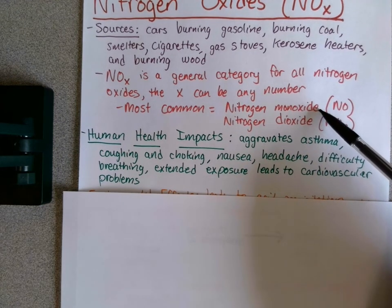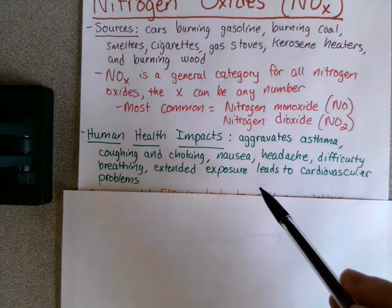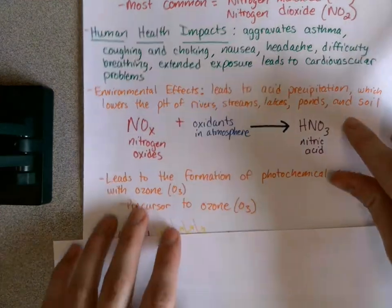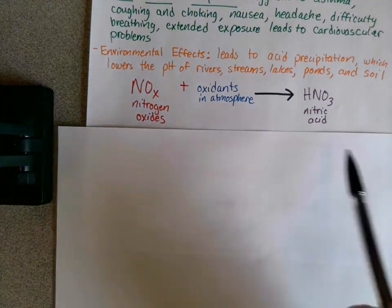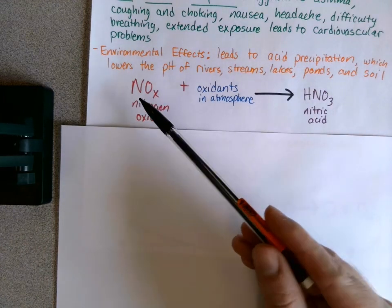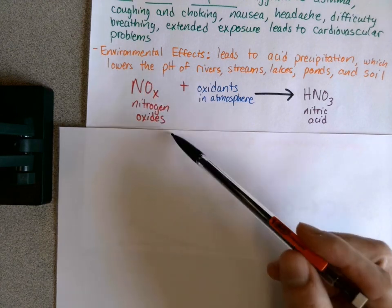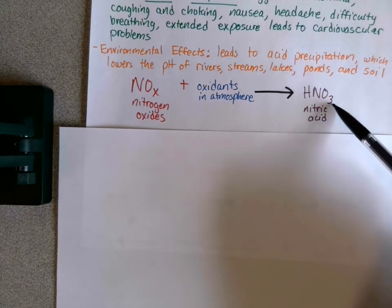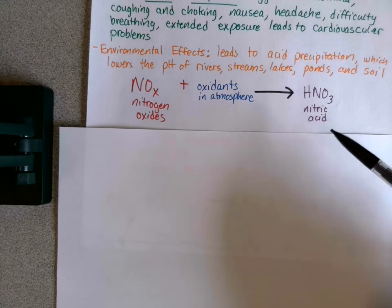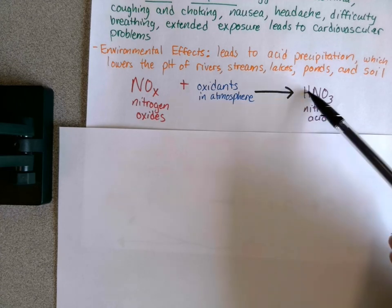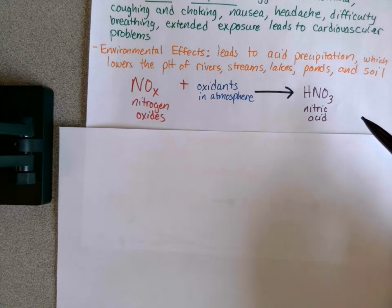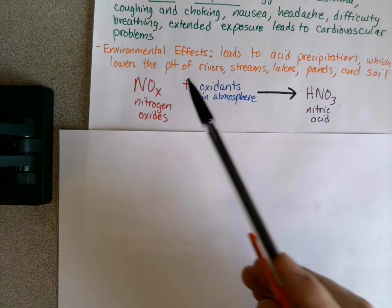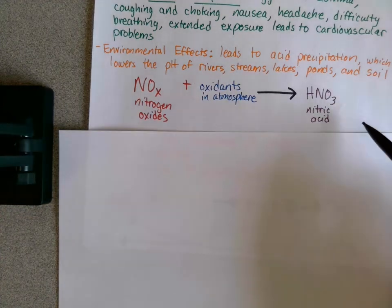For environmental impacts, NOx also leads to acid precipitation, just like sulfur dioxide. The nitrogen oxides react with oxidants in the atmosphere, producing nitric acid, which lowers the pH of soil, rivers, and streams, making the aquatic environment inhospitable and decreasing the CEC of soil so you can't grow crops. So both NOx and sulfur dioxide lead to acid precipitation.